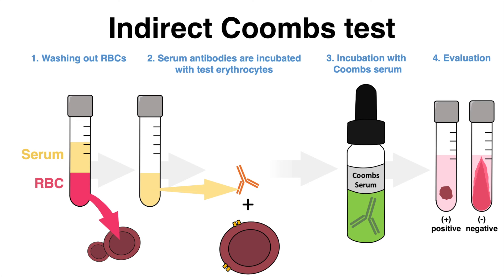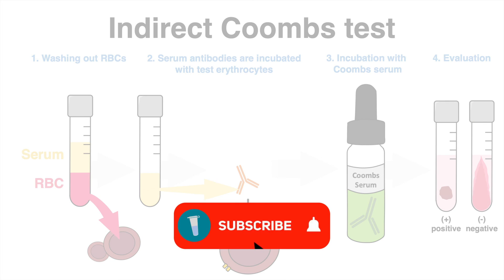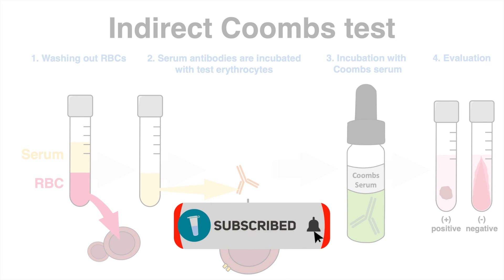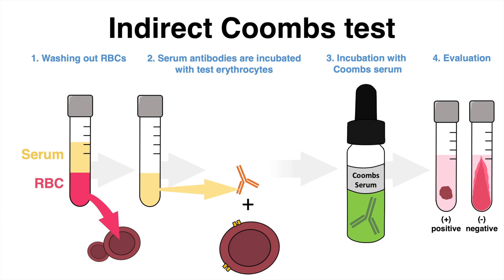The procedure is then continued as demonstrated with the direct Coombs test. The indirect Coombs test is used to check blood before transfusion. Further, pregnant women get a prenatal test to analyze whether the antibodies of a pregnant mother would harm the child when passed.